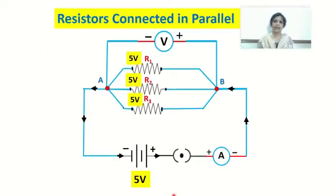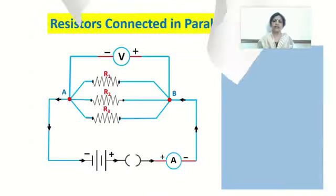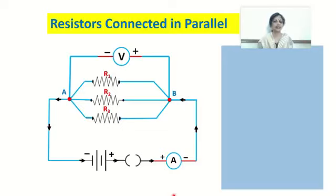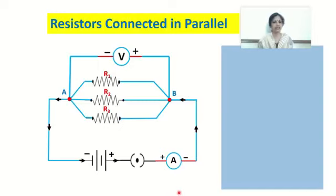Now, what about the current — does the current flowing through each resistor remain the same or does it change? We need to find out what is the current flowing through every resistor when they are connected in parallel. We plug in the key and measure how much is the current through the entire circuit using the ammeter connected in the circuit. We consider this total current as I.